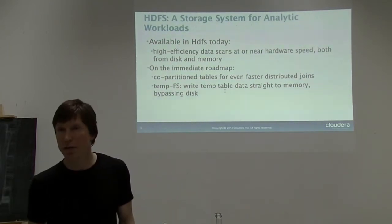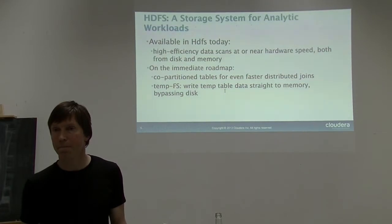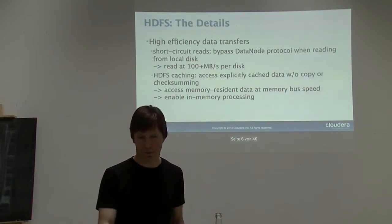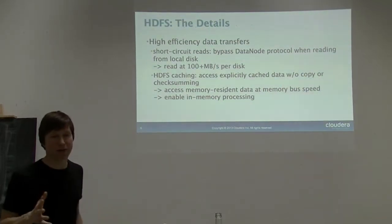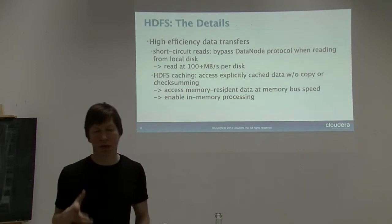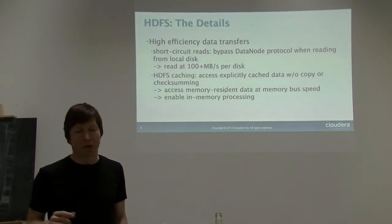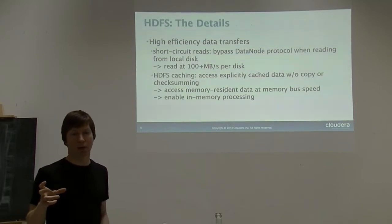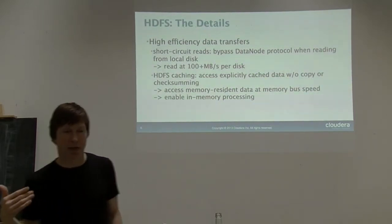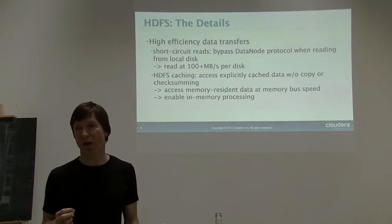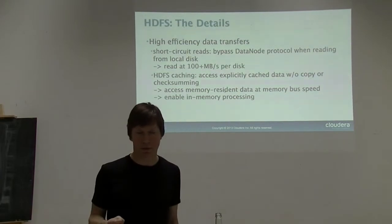On co-partitioning tables: the HDFS name node will take care of placement. HDFS has supported short-circuit reads for a while now—if you're doing local reads, you bypass the data node protocol entirely and talk directly to the operating system, getting full disk bandwidth. We routinely measure in excess of 500 megabytes per second per disk, which is essentially hardware speed.